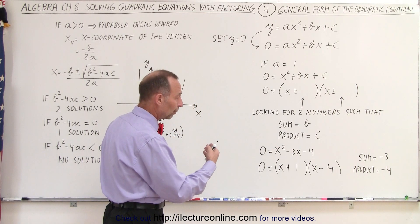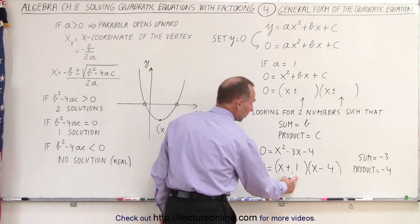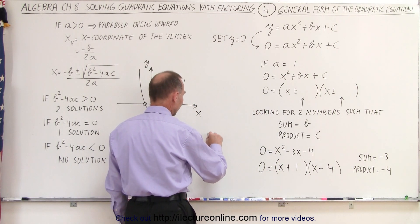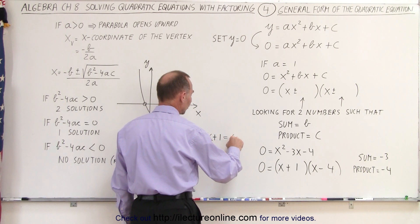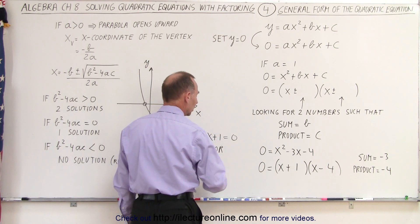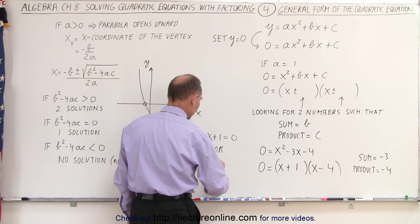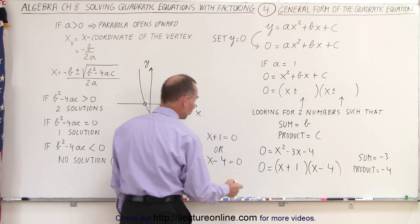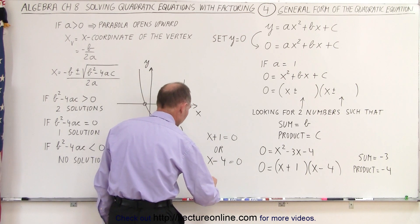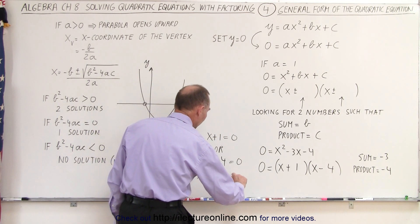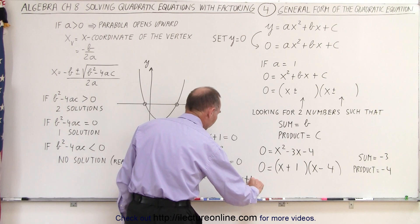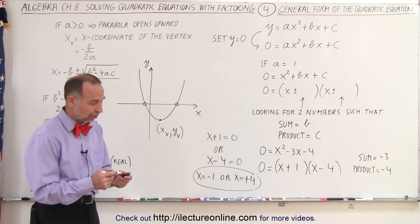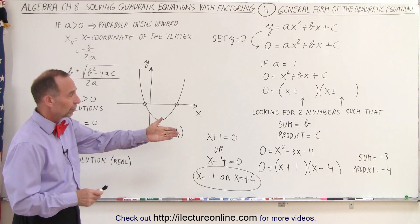Then of course you use the property of the 0 product. That means if you multiply these together and you get 0, then you can conclude that x plus 1 equals 0, or x minus 4 equals 0, which means that either x equals negative 1, or x equals positive 4. And so those are then the two solutions to our quadratic equation, which we solved using the method of factoring.